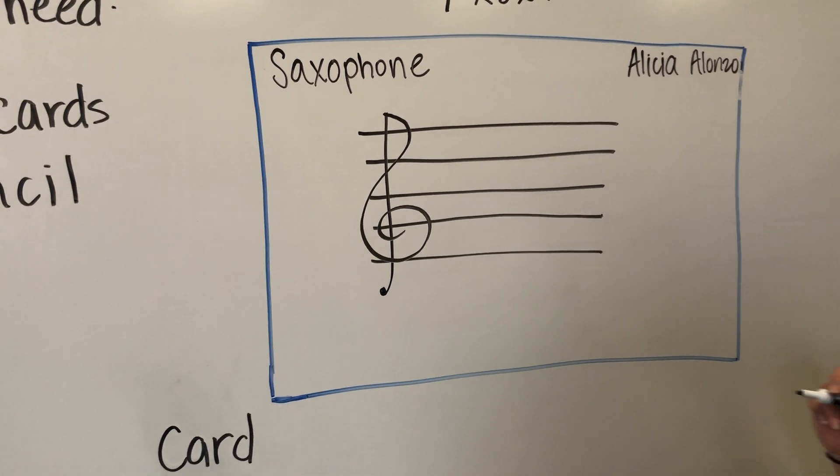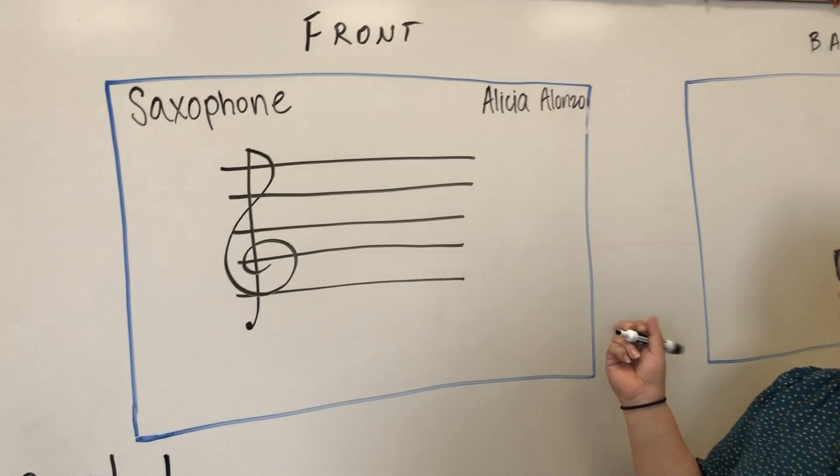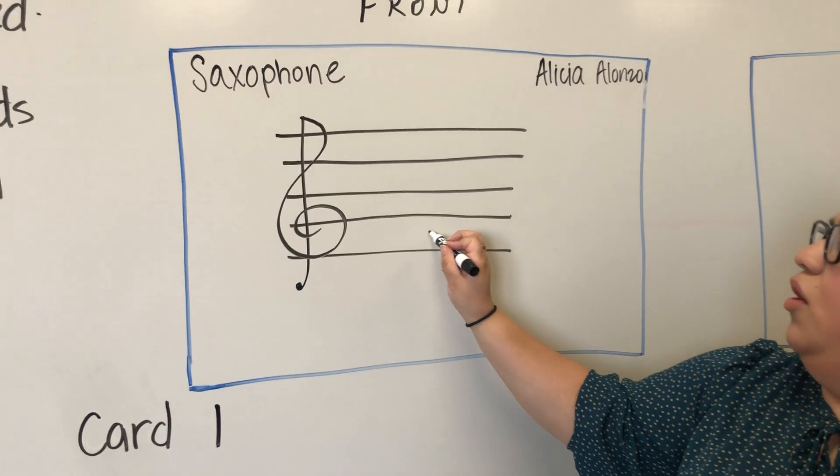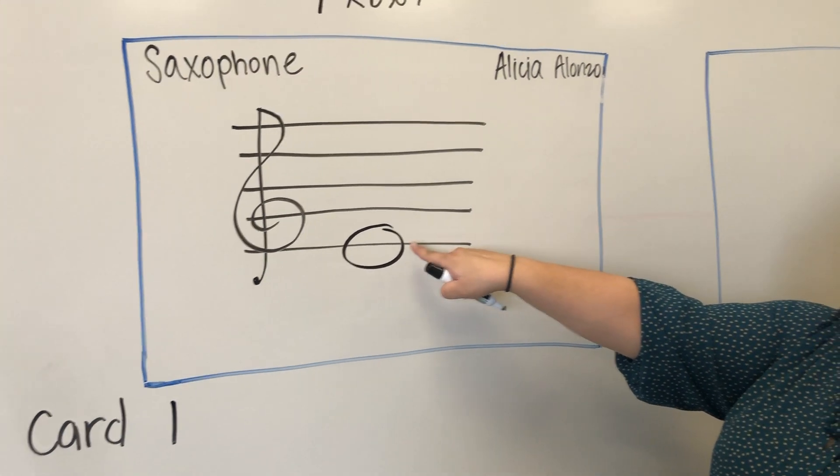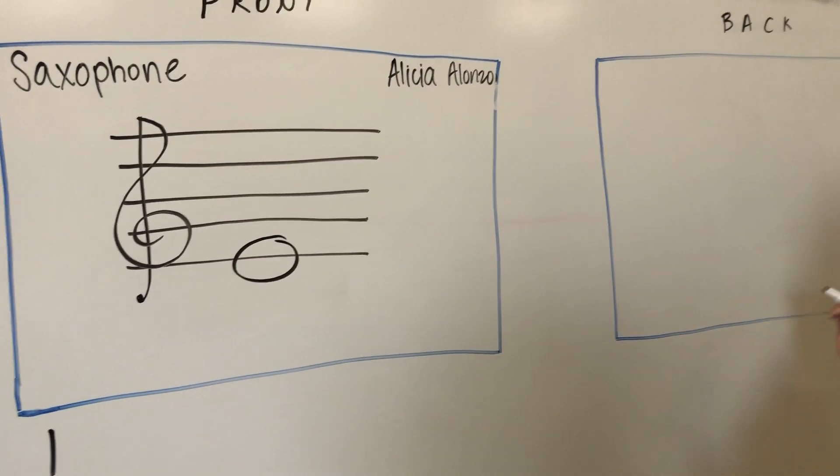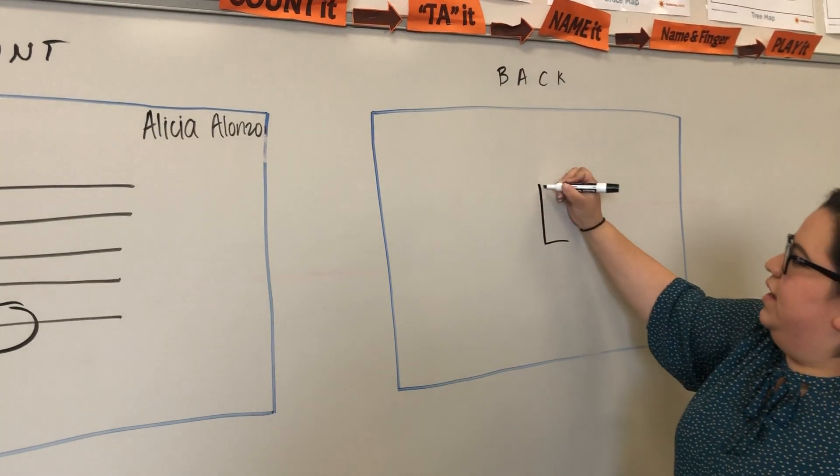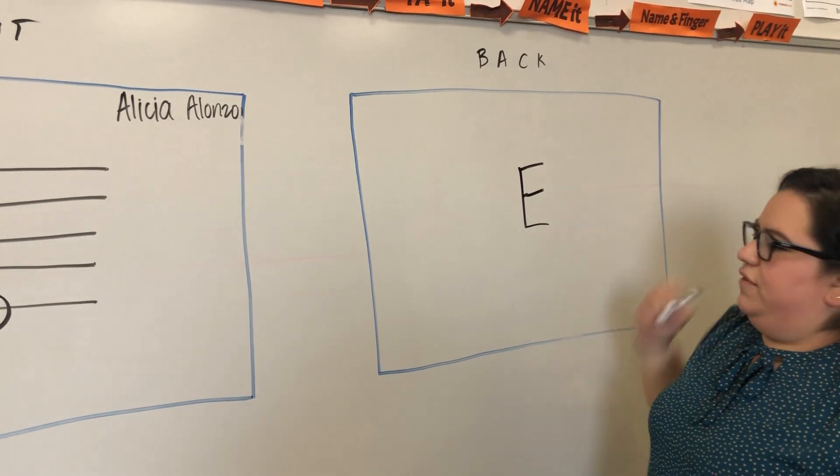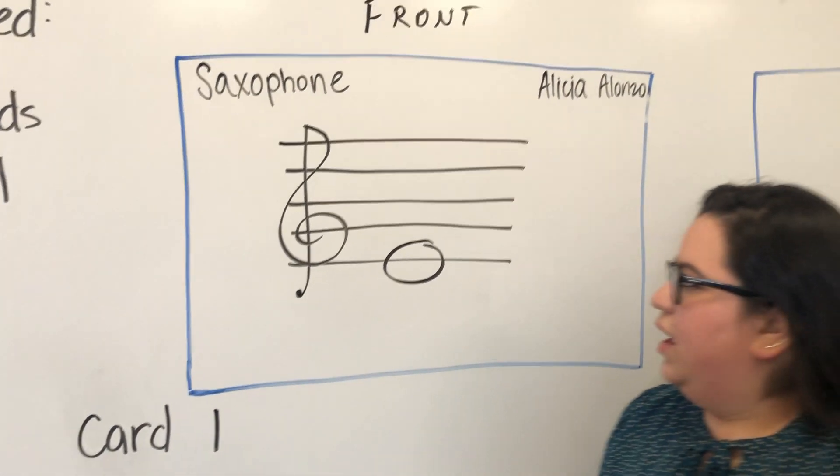The next thing we're going to do is start with card one. Take out the first card. You're going to draw a whole note, circle it, and you're going to draw a whole note around the first line. There should be a line through it. On the back of that card, you're going to write the letter E, because that is the bottom line of the treble clef staff.